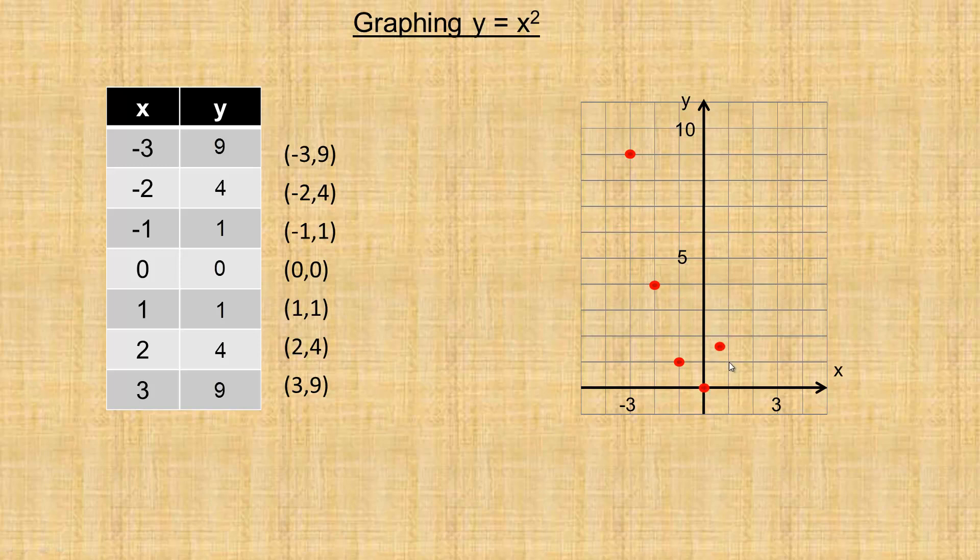And then 1, 1, so right 1 and up 1. That point right there. 2, 4, which is right 2 and up 4. We'll put a dot right there. And then 3, 9. So 3, 9 is going to be right up here.